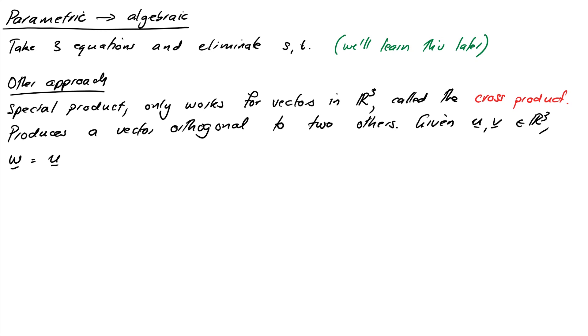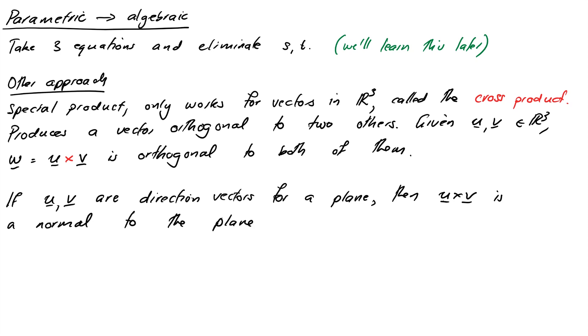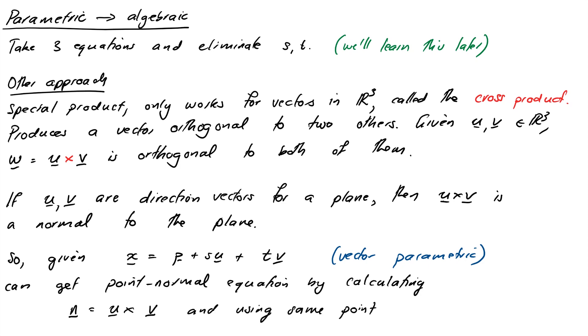So given vectors U and V, then W is equal to U cross V, it's like the times symbol, will be orthogonal to both of them. So if U and V happen to be direction vectors for a plane, then U cross V will be normal to the plane. So given a vector parametric equation for a plane, which is X equals P plus SU plus TV, you can form a point normal equation and hence the algebraic equation by calculating the normal to be N equals U cross V and by using the same point for your point. Okay, just S equals zero, T equals zero, so P.